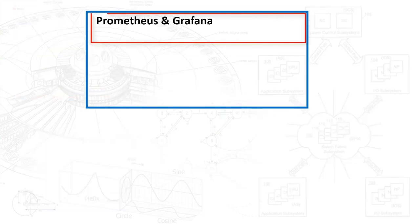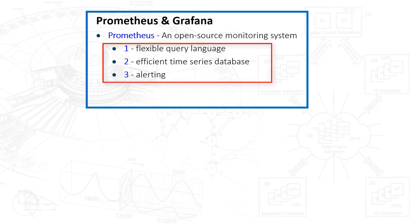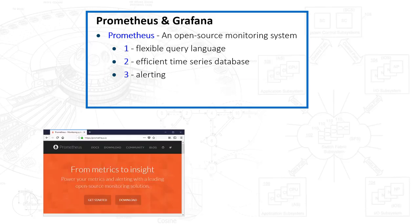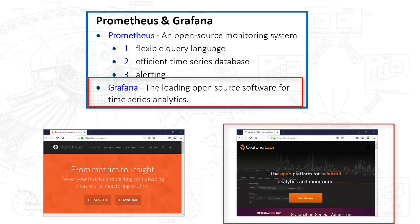Prometheus is an open source monitoring system. It has a flexible query language, an efficient time series database, and alerting. If you want to learn more, just go to Prometheus.io. Grafana is a general purpose leading open source software for time series analytics. In our case, we're just going to use it for the visual display — the dashboard — grabbing the data from Prometheus.